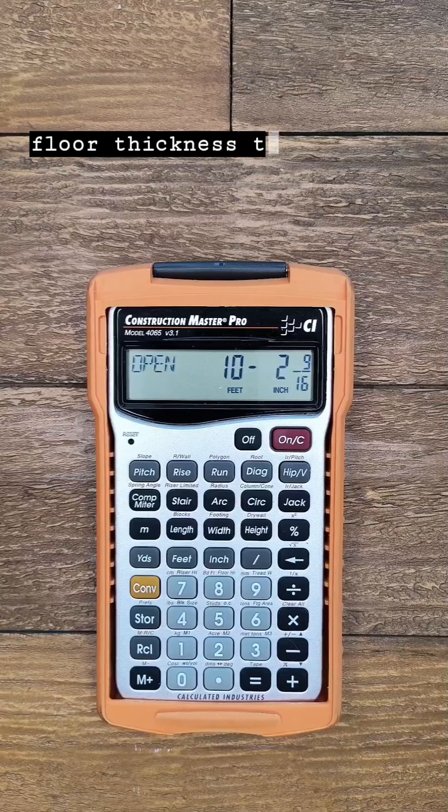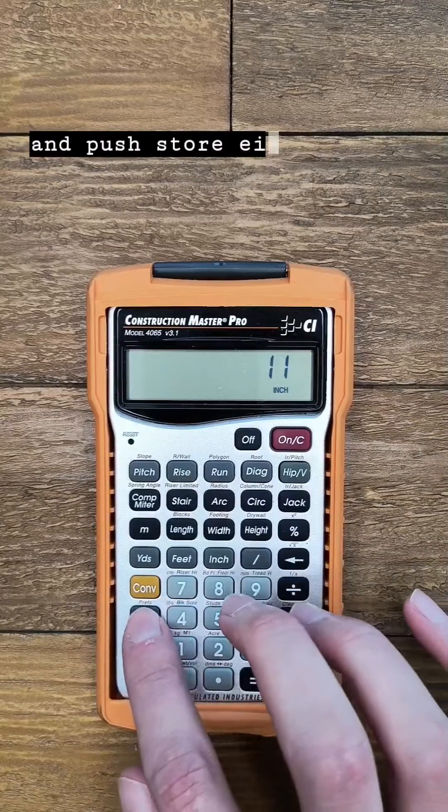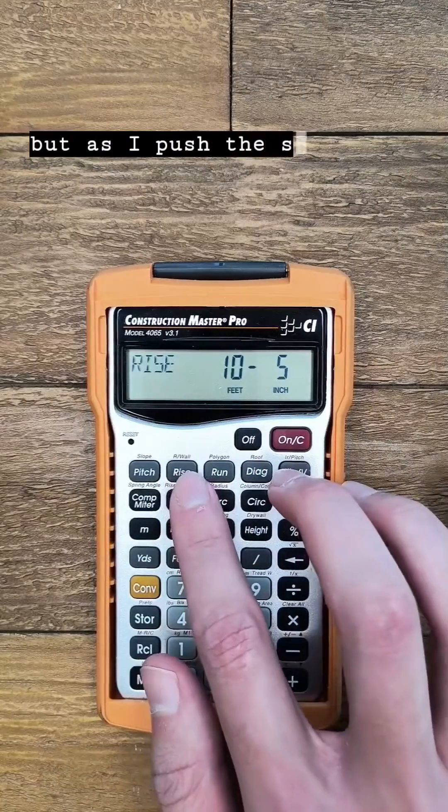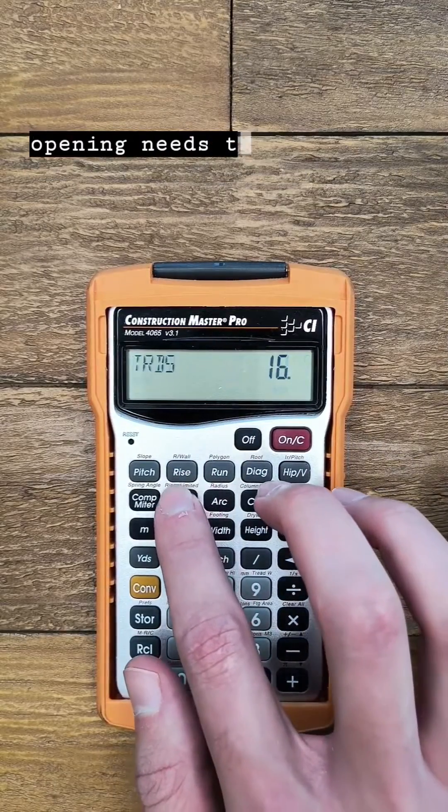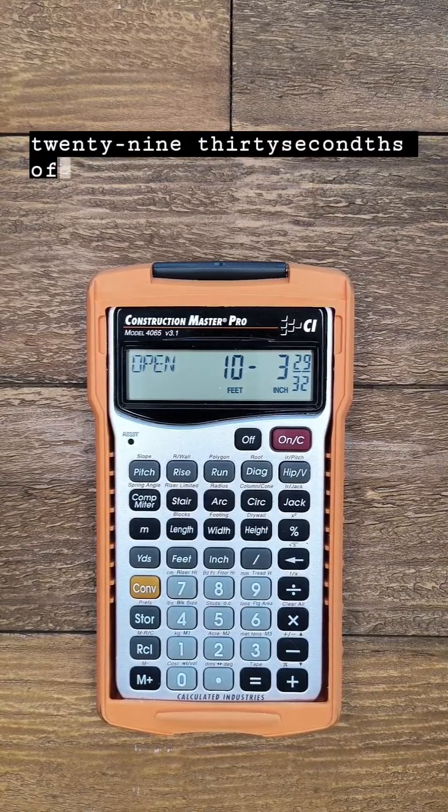Now let's change the floor thickness to 11 inches. So I'll enter 11 inches and push store 8. So I have the same rise entered, but as I push the stair button I'll see that the opening needs to be slightly longer at 10 feet 3 and 29/30 of an inch.